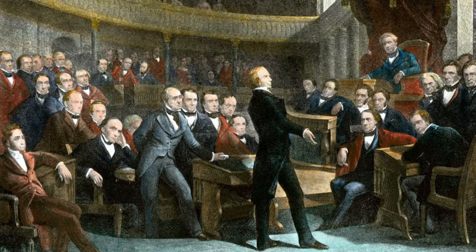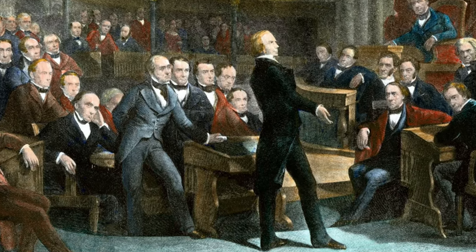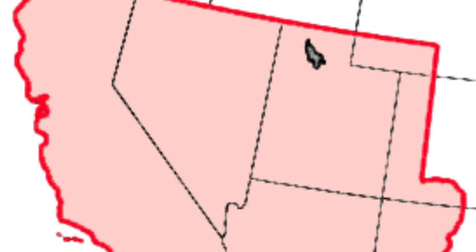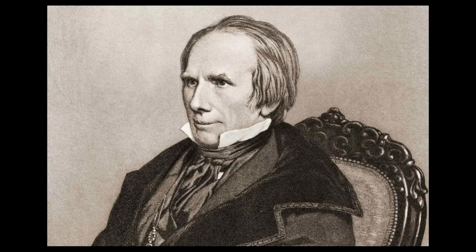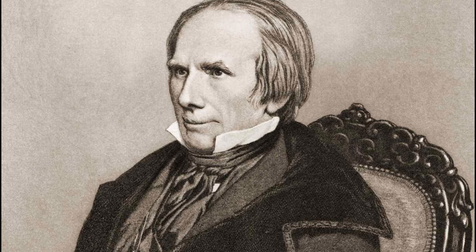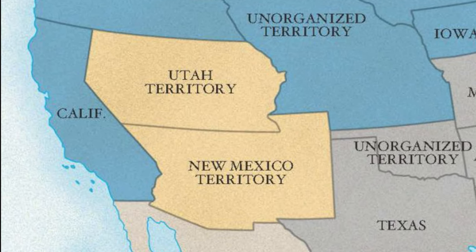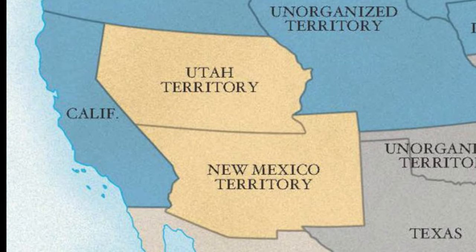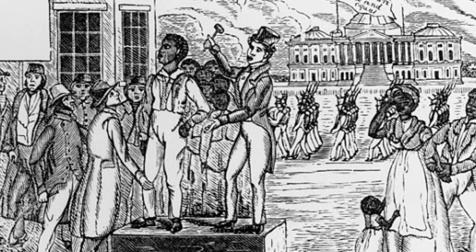With the failure of the Wilmot Proviso, tensions between the North and the South continued to grow as Congress needed to decide what to do with the new land acquired after the Mexican-American War. One of the new territories, California, wanted to be a free state, but this alone would destroy the balance between free and slave states in the Union. Senator Henry Clay came up with a variety of proposals in the interest of keeping the peace. His idea included accepting California as a free state, but also establishing the territories of Utah and New Mexico, which would have no current restrictions for or against slavery. The proposal included the strengthening of the Fugitive Slave Act, the refined boundaries of the state of Texas, and the banning of the slave trade in Washington, D.C., although slavery itself would still be allowed.